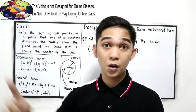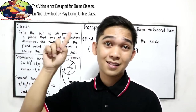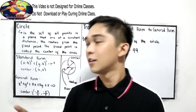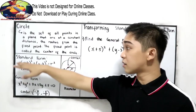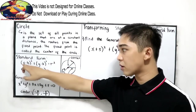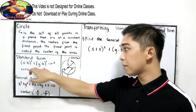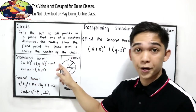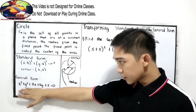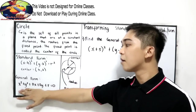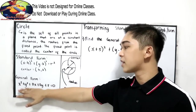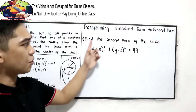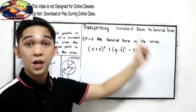If you haven't watched that video, I will put it in our cart — just click the cart and it will direct you to that video. Let us recall: the standard form is quantity x minus h squared plus quantity y minus k squared is equal to r squared. And the general form is x squared plus y squared plus Dx plus Ey plus F is equal to 0. Our lesson: transforming standard form to general form.